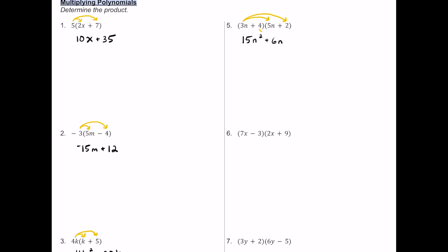Next, 4 times 5n is positive 20n. Then 4 times 2 is positive 8. In the middle we have 6n and 20n as like terms, so we combine those to get 15n squared plus 26n plus 8. This is the final simplified product.